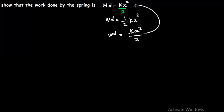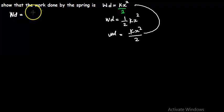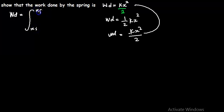We can use the formula for work done by variable forces. This is the first formula we need to use, followed by Hooke's law. The work done by variable forces is given by the integral of force over the displacement — the integral from x of i to x of f of f of x, dx.